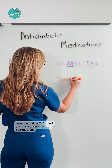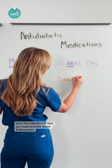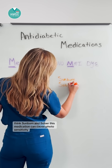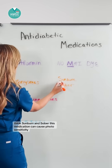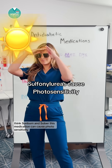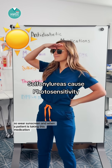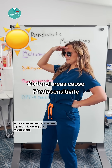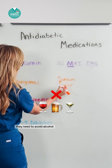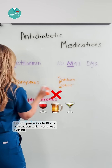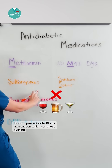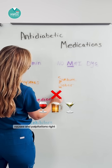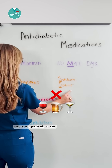The main NCLEX fact for sulfonylureas: think 'sunburn and sober.' This medication can cause photosensitivity, so wear sunscreen. And patients taking this medication need to avoid alcohol, to prevent a disulfiram-like reaction, which can cause flushing, nausea, and palpitations.